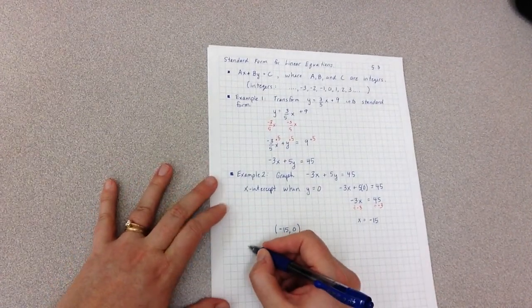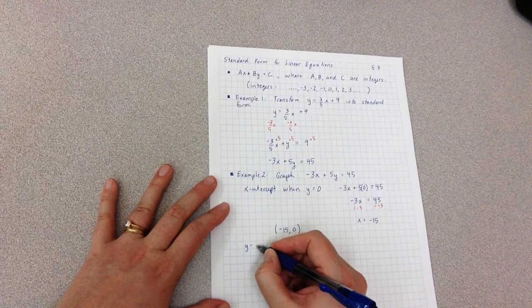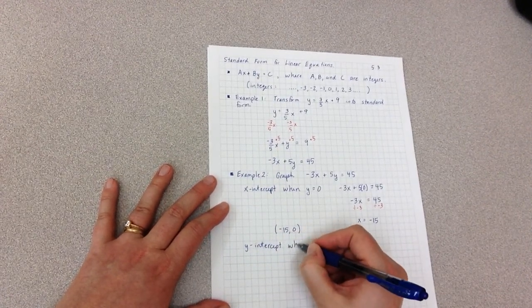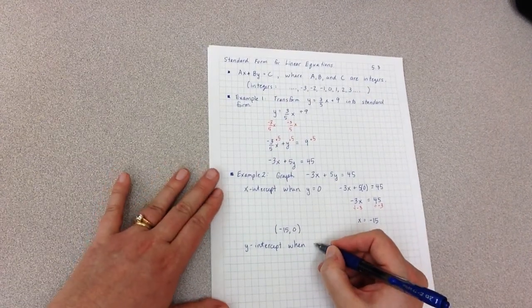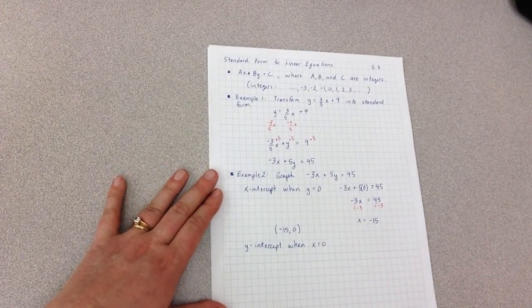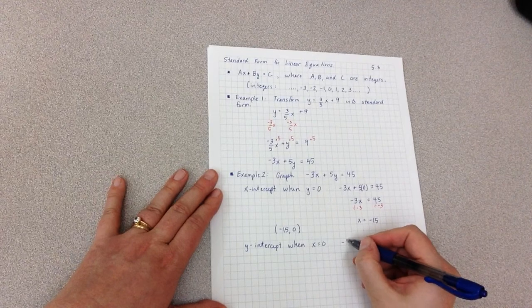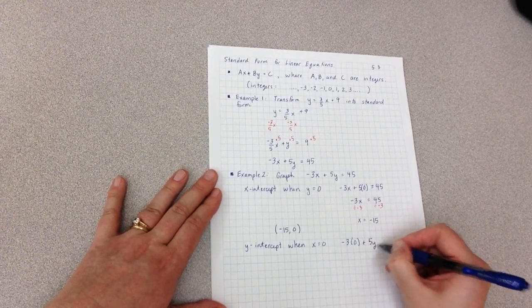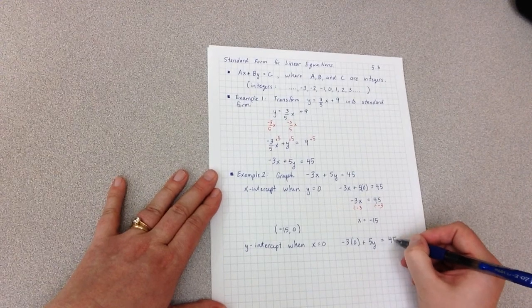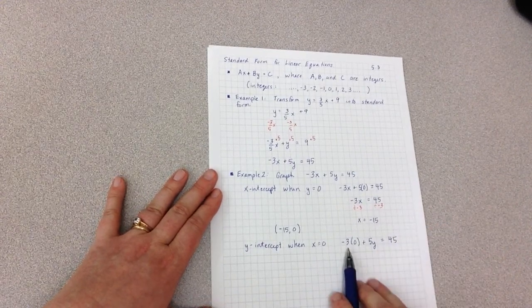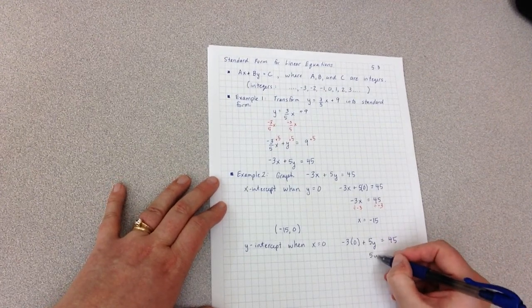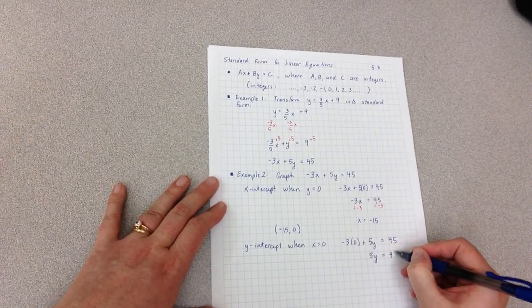I can find my y-intercept using this same process, except that in this case the y-intercept happens when x equals 0. So I have negative 3 times 0 plus 5y equals 45. Of course negative 3 times 0 is 0. I'm left with 5y equals 45.